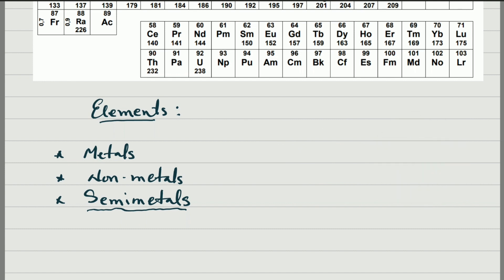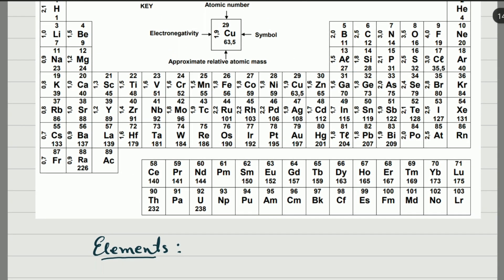The first activity we are going to do is color the periodic table. First, we'll choose a color for the semi-metals — in my case, I'm going to use blue. The semi-metals start from this side here; this element here is a semi-metal, going down to this one, and continuing along — the ones I'm marking here are all semi-metals. That diagonal line is what we call the semi-metals.